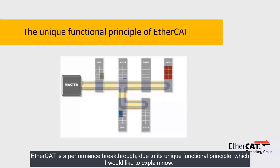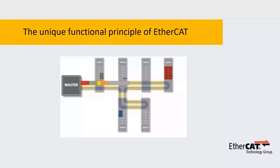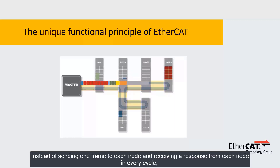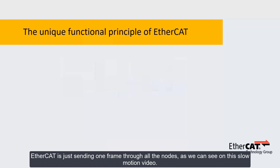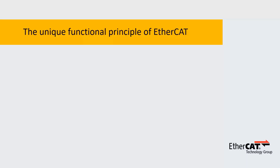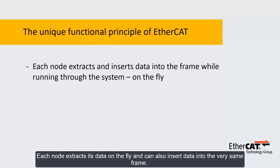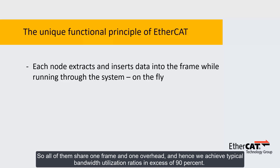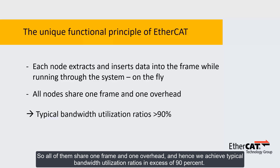EtherCAT is a performance breakthrough due to its unique functional principle. Instead of sending one frame to each node and receiving a response from each node in every cycle, EtherCAT sends just one frame to all the nodes, as we can see on this slow motion video. Each node extracts its data on the fly and can also insert data into the very same frame. So all of them share one frame and one overhead, and hence we achieve typical bandwidth utilization ratios in excess of 90%.